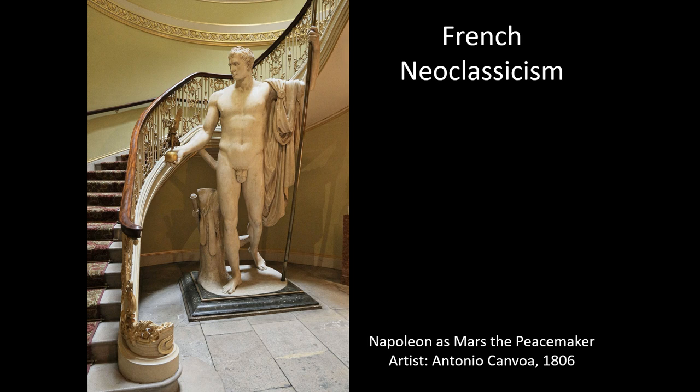The statue of Napoleon is a great example of this classical revivalism, where Napoleon is a powerful political figure of 19th century France, but he's shown in the guise of the Roman war god Mars, complete with the classical heroicizing and idealizing nudity, and the carefully measured contrapposto stance that is a page out of the playbook of classical period Greek sculptors of the 5th century.